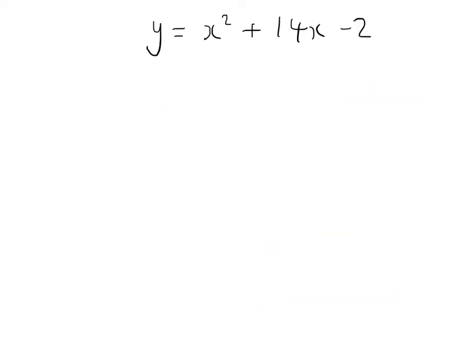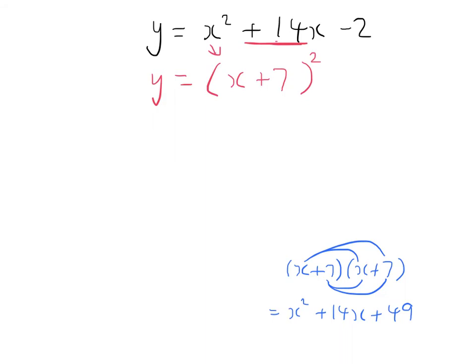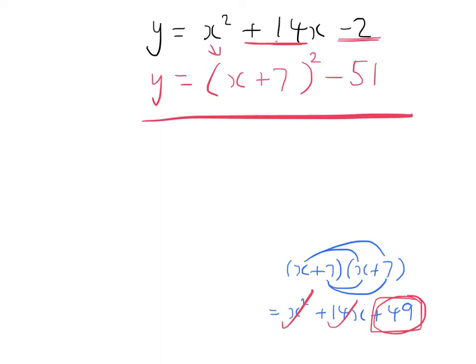For x squared plus 14x minus 2: half of positive 14 is positive 7, so we use x plus 7. Expanding gives x squared plus 14x plus 49, but we want minus 2, so we need to subtract 51 — that's taking away the 49 it gives us and then the additional amount to reach minus 2. So the completed square form is x plus 7 all squared minus 51.